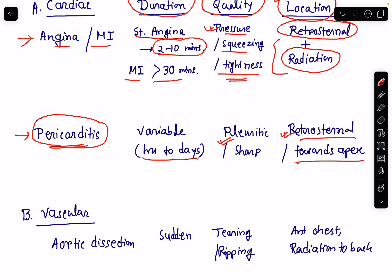The pain of pericarditis also radiates, and the radiation is usually towards the left shoulder.